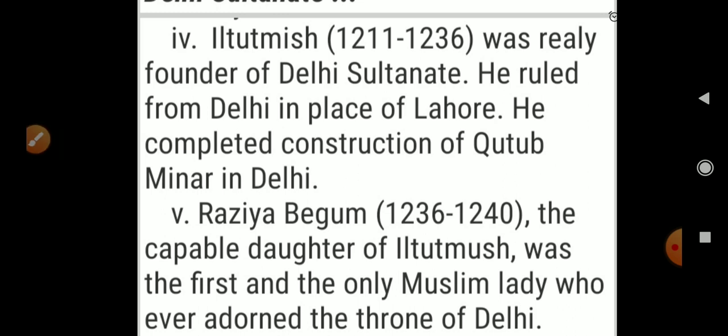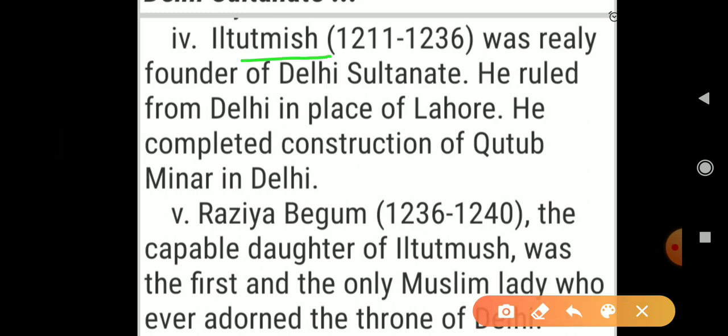Ilthamish is considered the real founder of Delhi Sultanate. His time period was 1211 to 1236. He ruled from Delhi instead of Lahore, which is why he is regarded as the real founder. He also completed the construction of Qutub Minar in Delhi — the construction was started by Qutbuddin Aibak but completed by Ilthamish.